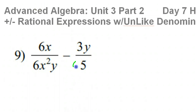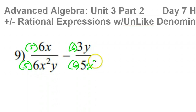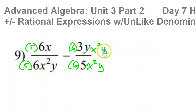If I multiply this side by 6, I'll have 30. I'll need to do the same thing in the top. To make this side 30, I'll have to multiply by 5 in the top and the bottom. Now they're both 30. This side has x squared, so this side is now x squared — I have to make that change in the top and the bottom. This side has a y, so I'll have to give this side a y in the top and the bottom. Now they're both 30x squared y.